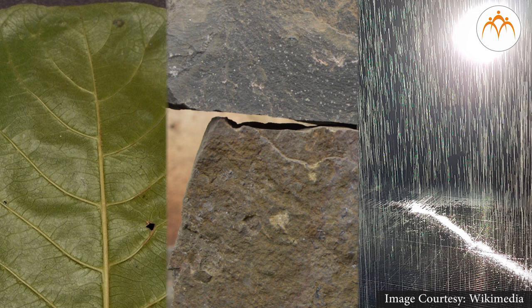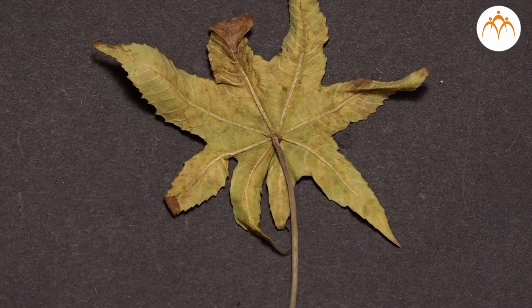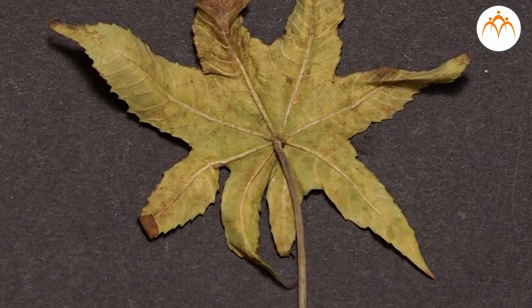So, in the nature we find mostly the approximations of different geometrical concepts that are derived in mathematics. Now we know what geometric straight lines are. Let us explore what intersecting lines are. Look at the veins on this leaf.